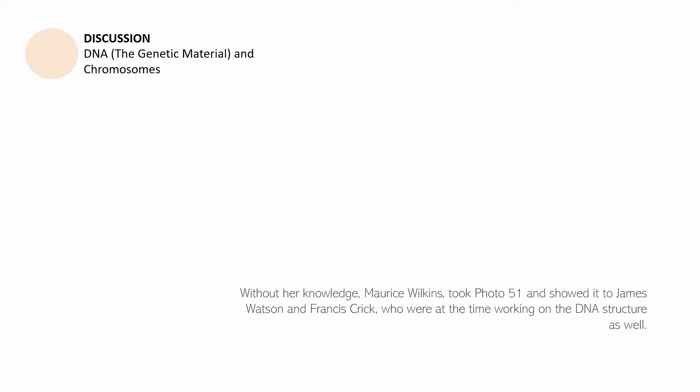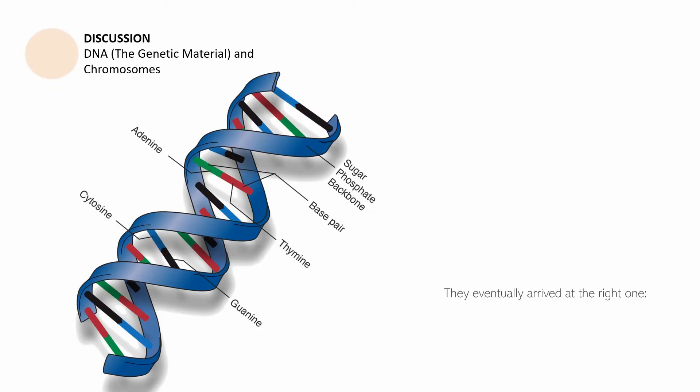Despite everything that she worked on, without her knowledge, Maurice Wilkins took photo 51 and showed it to James Watson and Francis Crick, who were at the time working on the DNA structure as well. Instead of calculating the exact positions of the atoms, what Crick and Watson did is that they only quickly analyzed Franklin's data and used it to create several models. They tried and then with logic, they arrived at the right one, which is a double helical structure with the nucleotides, the base pairs, that are actually quite like rungs of a ladder.